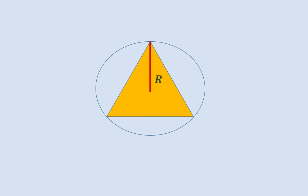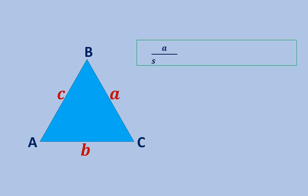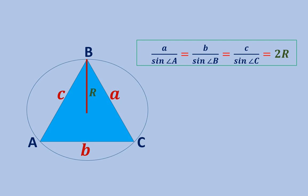To do this, let's first get acquainted with the sine theorem. If you have the triangle ABC, whose sides are A, B and C, then the sine theorem states that A divided by sine of angle A equals B divided by sine of angle B equals C divided by sine of angle C equals 2 times R, where R is the radius of the circle circumscribed around the triangle ABC.